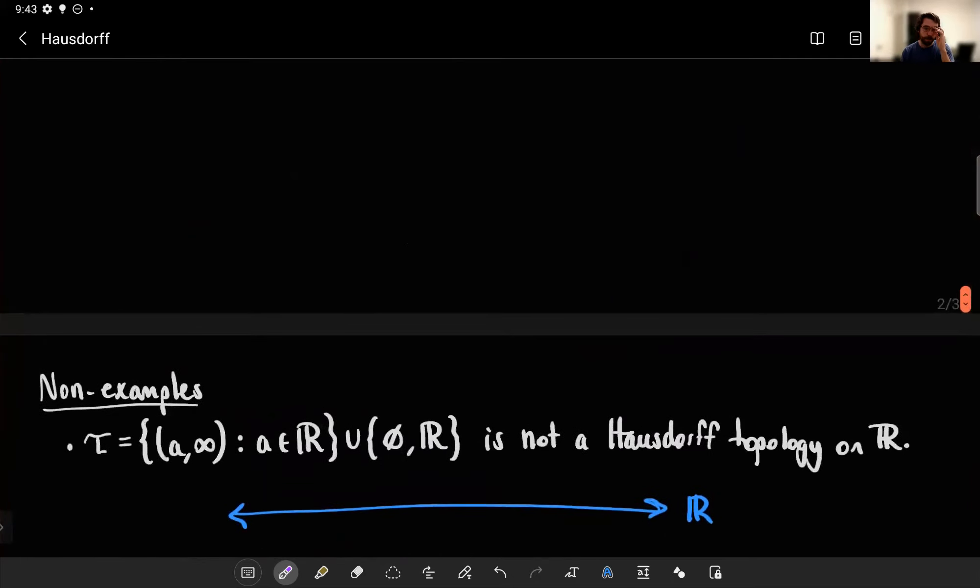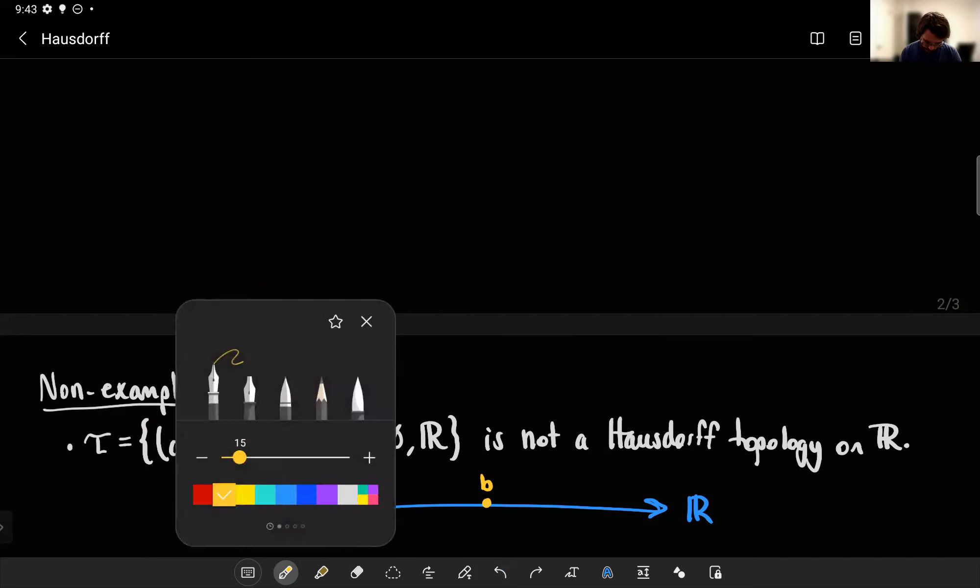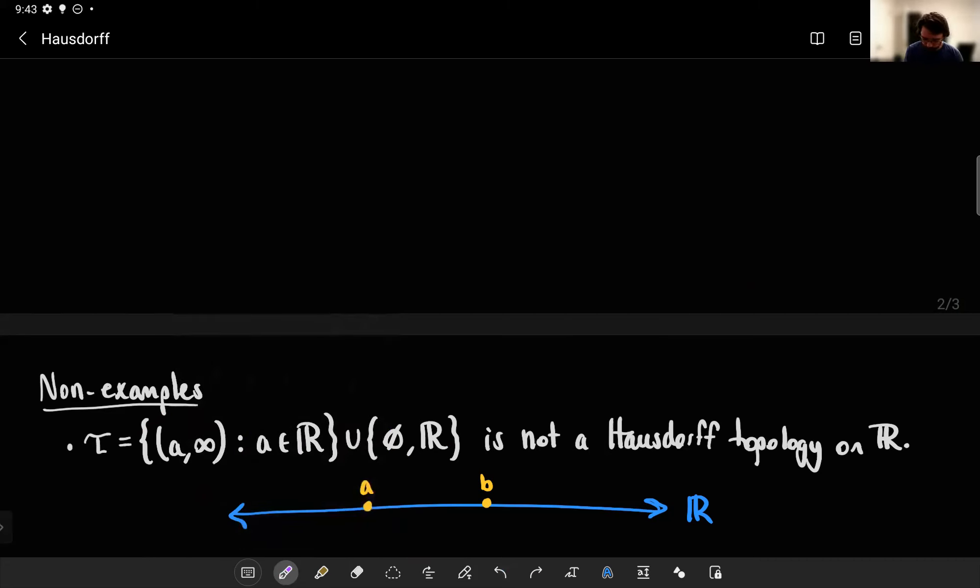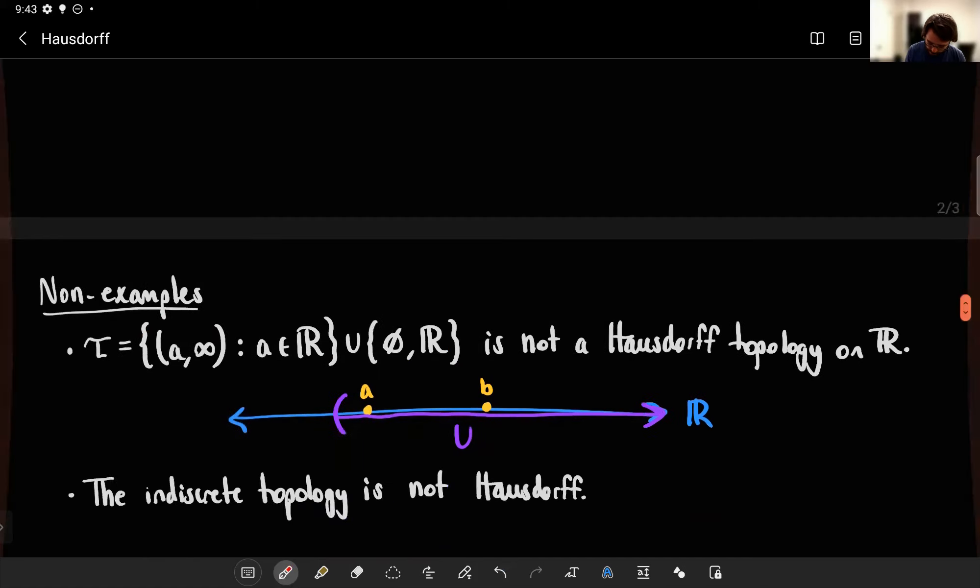But there are some really cool non-Hausdorff spaces. For example, I've shown this example before. Let's say I have points A and B that are distinct from one another. With this topology, the open ray topology, or any open ray from some real number to infinity is an open set. But this is not going to be a Hausdorff topology because, for example, I could take U equal to this purple set. And I could take V equal to something containing B.